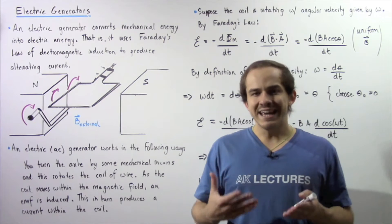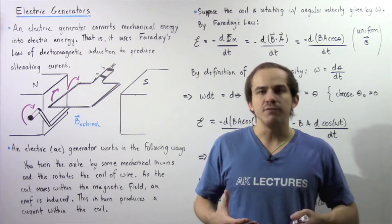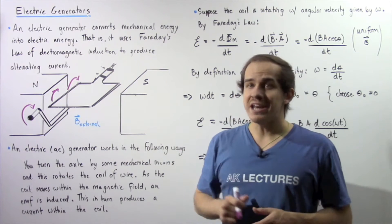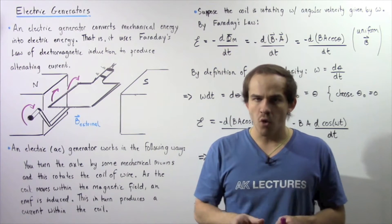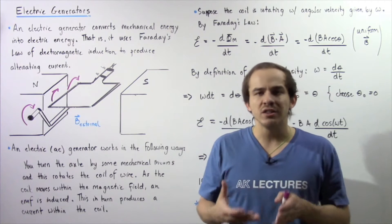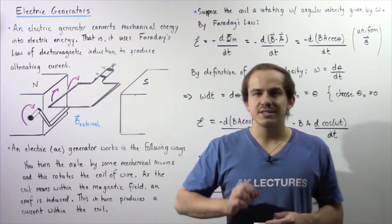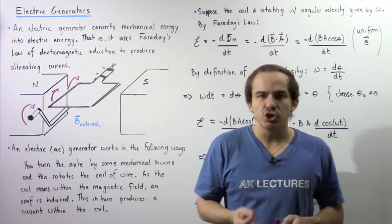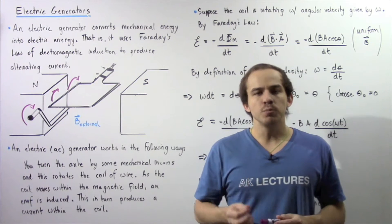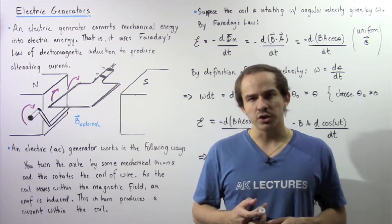An electric generator essentially transforms mechanical energy into electric energy. That is, it uses the concept of Faraday's law of electromagnetic induction to produce an alternating electric current.